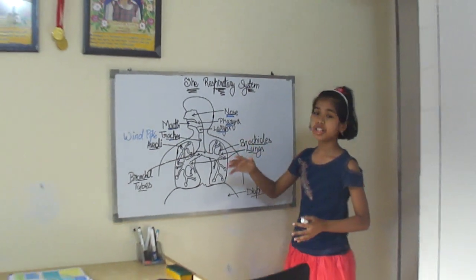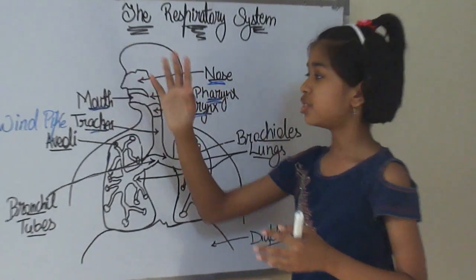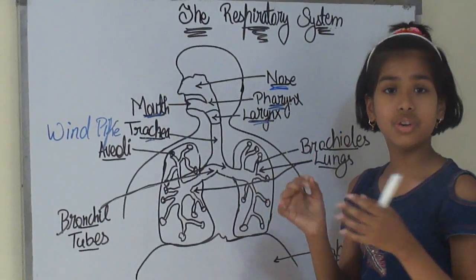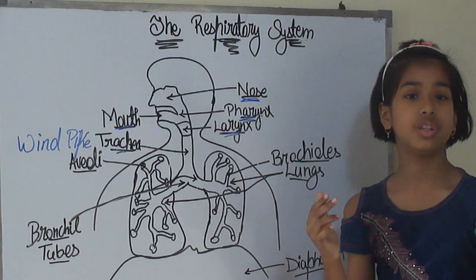Now, let me explain the respiratory system. When the air or oxygen enters our body, it enters through the nostrils. There are two holes inside our nose, and those are called the nostrils.